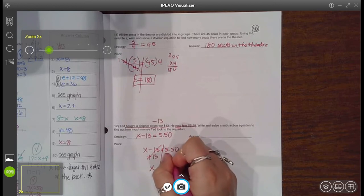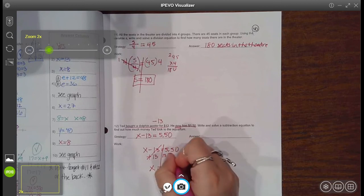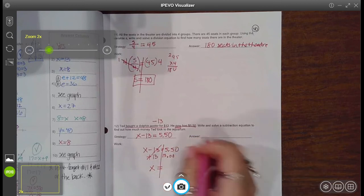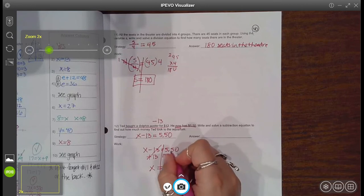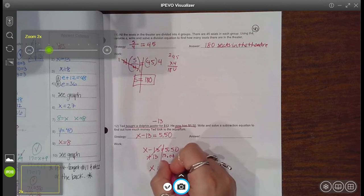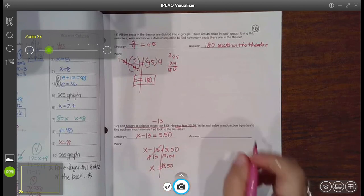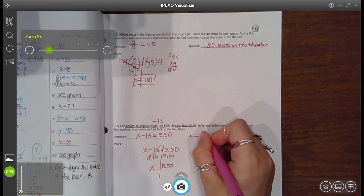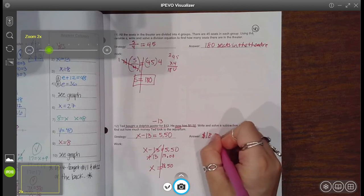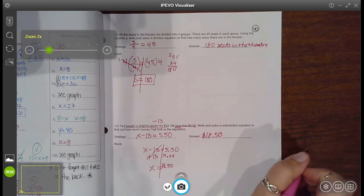And I'm talking about money. So line up your decimal and $13. So then add down that zero. That's five. Bring the decimal down five and three make eight, bring down the one, which means your answer is he brought $18.50 with him to the aquarium.